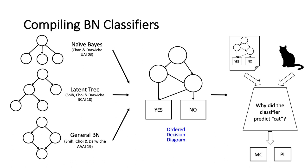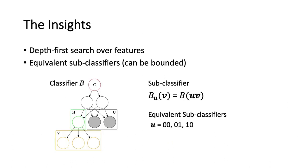The key idea behind the algorithm is depth-first search over features, similar to what you'd do in DPLL for SAT solvers. The other major component is the notion of equivalent sub-classifiers. Sometimes when you fix some features to a particular value, you get a sub-classifier over the remaining features, and sometimes it doesn't matter how you fix the first set of features - you still get the same classifier over the remaining ones. The algorithm identifies such sub-classifiers and exploits them.